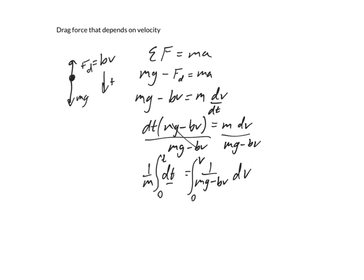So I'm going to go ahead and do the integrations. Integration of dt is t, and we're plugging our limits. t minus 0 is t, so we get t over m here. And then, on the right-hand side, I'm going to use my substitution here.